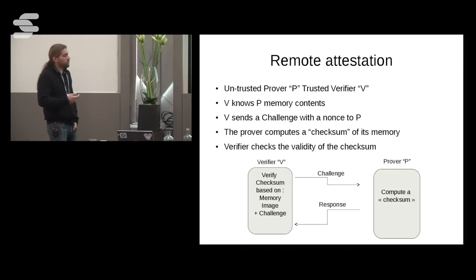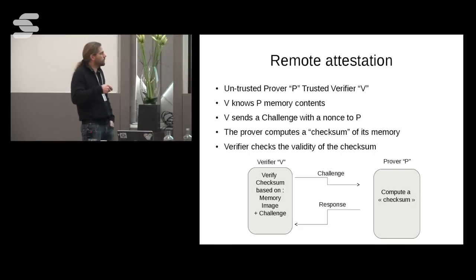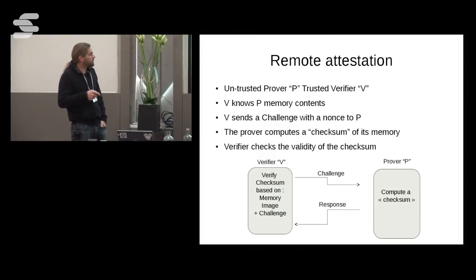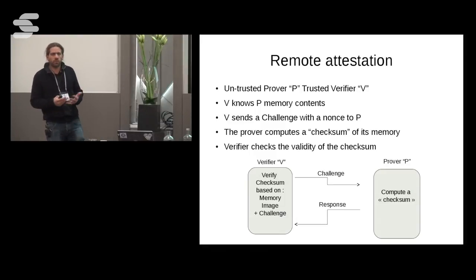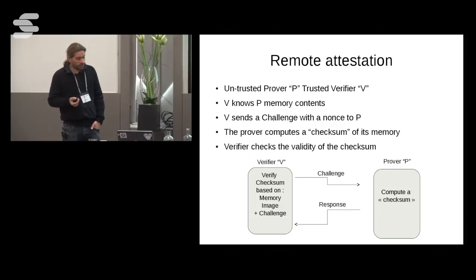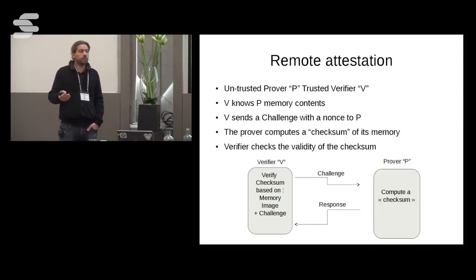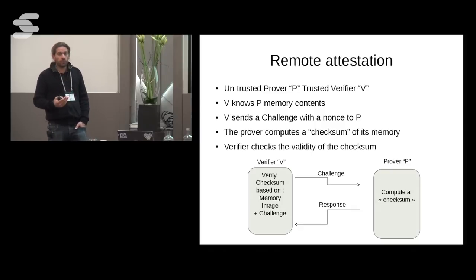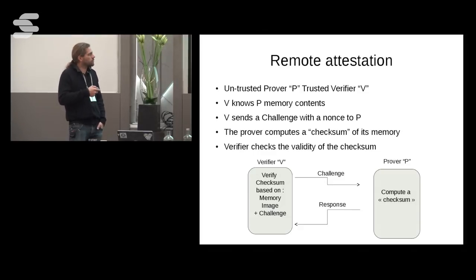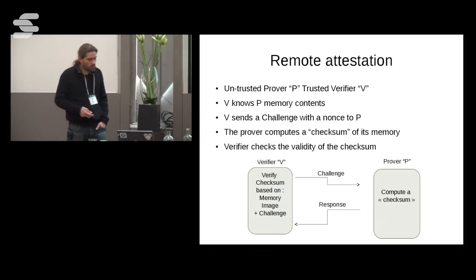Remote attestation uses a simple protocol. A verifier sends a challenge to a prover device. The prover computes a checksum of its memory and returns the response. The verifier knows the expected state of the prover's memory and can verify the checksum is correct. To prevent replay attacks, you send a nonce so each request is unique. This gives a protocol to verify the integrity of the code running on such a system.